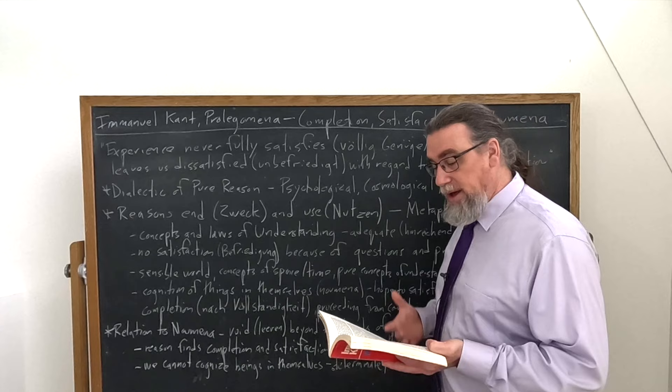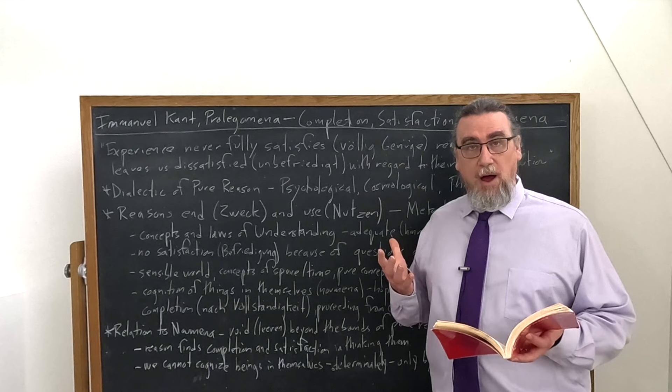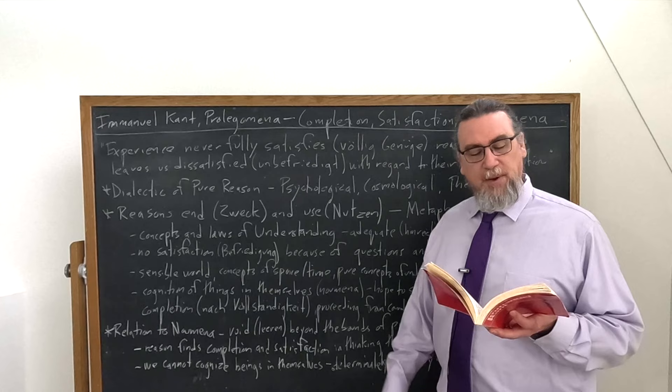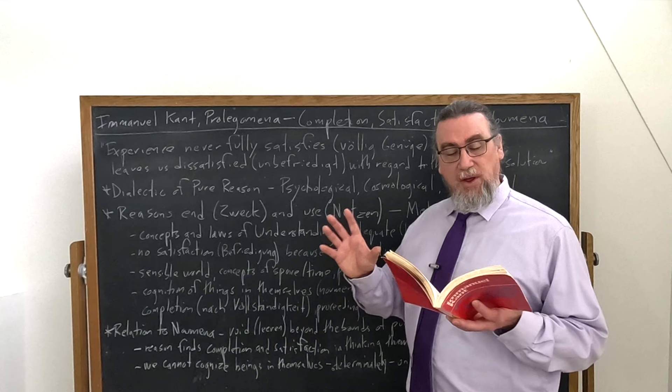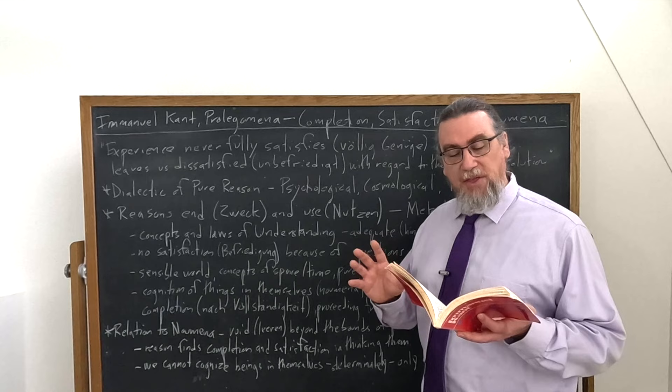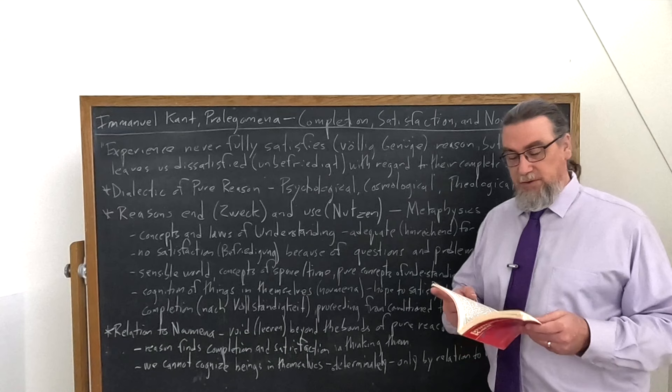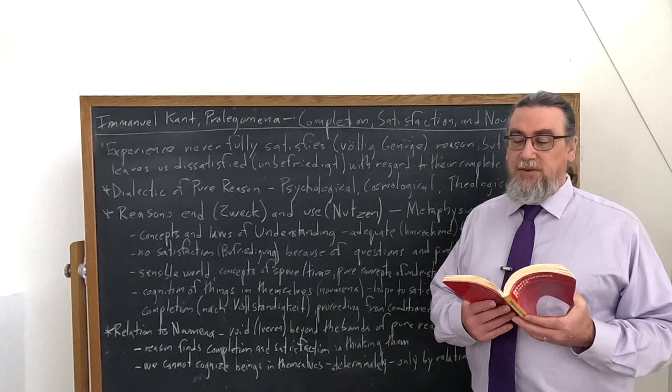Now, Kant is also going to talk, as I mentioned in the next paragraph about the noumena. What is the relation of reason to the noumena? He says that the transcendental ideas have urged us to approach them and have led us to the spot where the occupied space that is experienced touches the void, the leeren, the empty, where that of which we can know nothing, that is noumena. He says we can determine the bounds of, of reason. So the void is actually beyond the bounds of pure reason in this case. And this is going to lead us. He's going to talk about the supreme being in just a moment. And we're going to talk about that a little bit later.